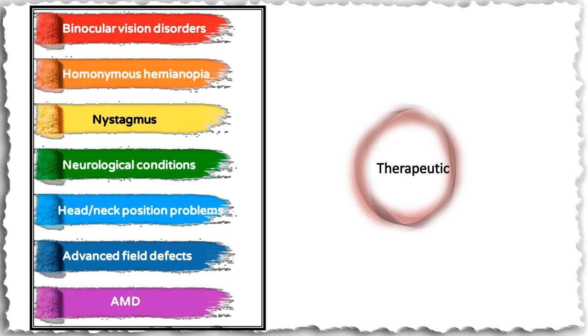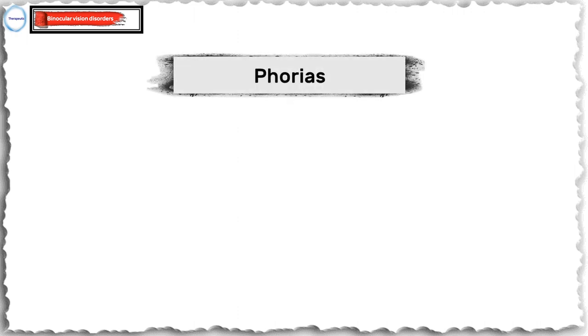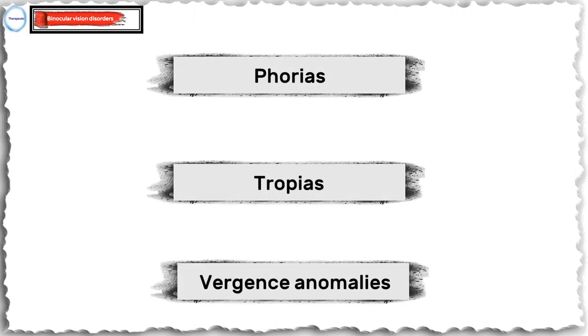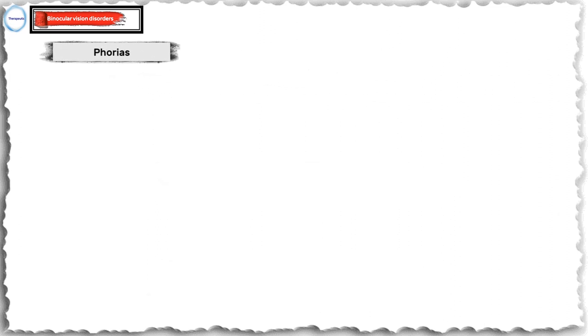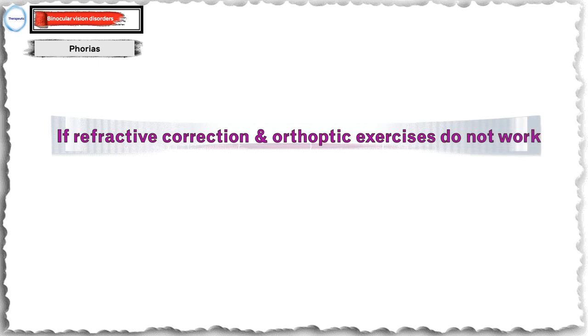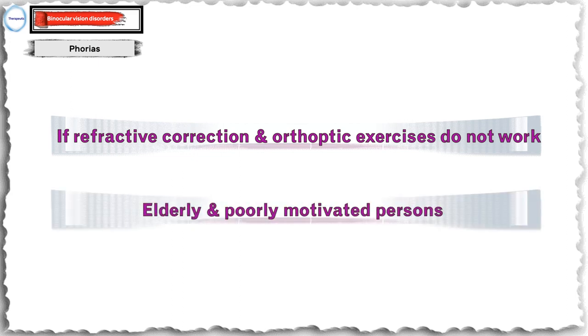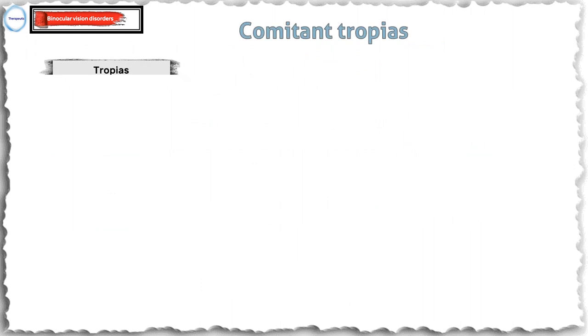The therapeutic uses are many. We shall briefly discuss each of them. The binocular vision disorders in which prisms may be used are phorias, tropias, and vergence anomalies. Prisms are not the first choice of treatment in phorias; they may be tried if refractive correction and orthoptic exercises do not work, in patients with decompensated phorias, and in elderly and poorly motivated persons. The base of the prism is directed away from the direction of deviation, that is, the apex is towards the deviation.